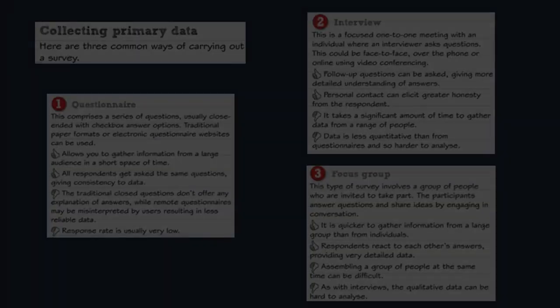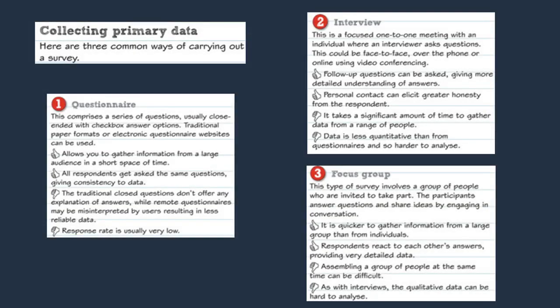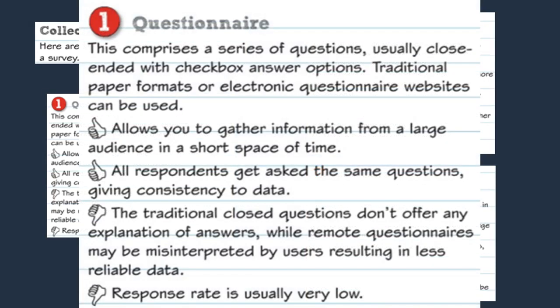On the screen here I've got three common methods of collecting primary data. Primary data is information the business has collected by themselves. The first method we're going to talk about is questionnaires. Questionnaires can be a great way for companies to gather data and information about their customers, allowing businesses to gather information from a large population in a short amount of time. This is good because the company can generalise the data and it means it can represent a larger audience.